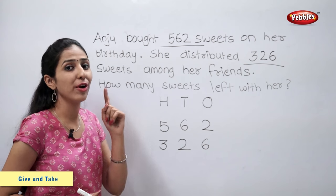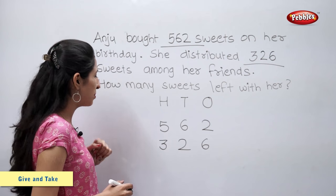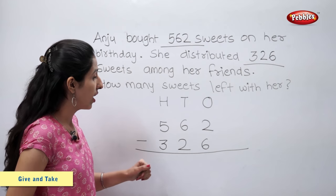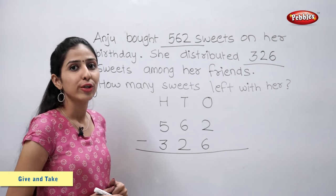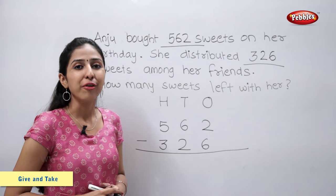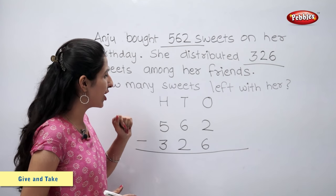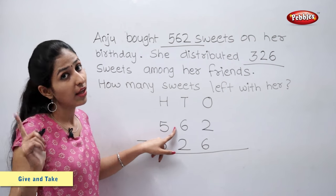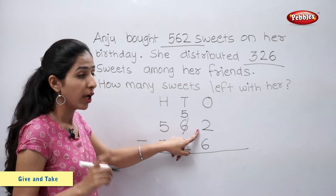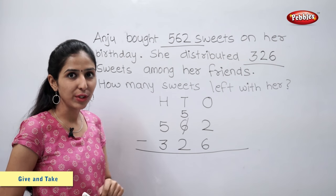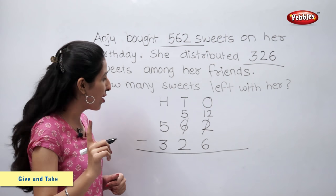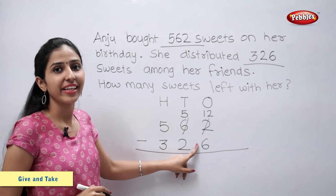We have to find the number of sweets left with Anju, so let's subtract. Let us subtract ones first. Two minus six — students, we cannot subtract six ones from two ones. So, we will borrow one ten from the tens column. Six tens minus one ten is equal to five tens. Now, two plus ten is equal to twelve, so this two becomes twelve.